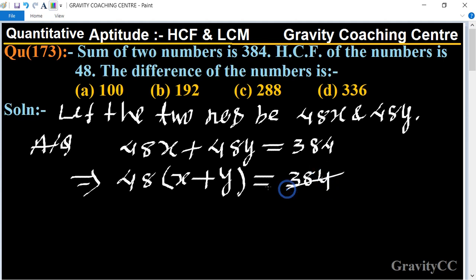384 canceled by 48 is 8 times, so x plus y equal to 8.